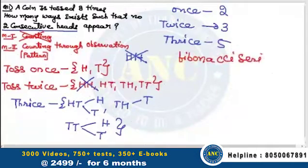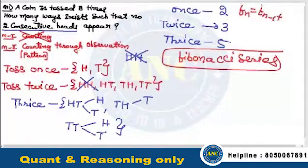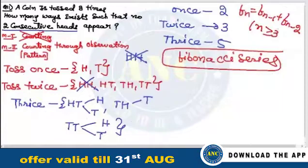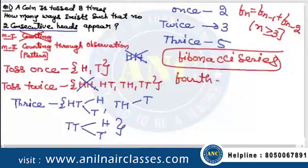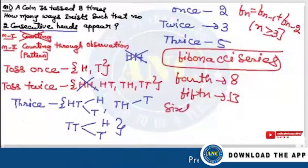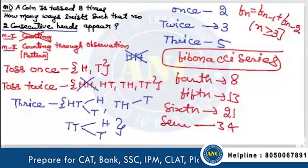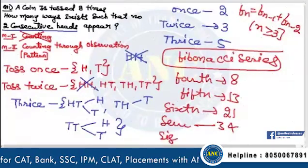This is a beautiful application of the Fibonacci series. F(n) = F(n-1) + F(n-2) — each term is the sum of the previous two. So: once = 2, twice = 3, thrice = 5, fourth = 8, fifth = 13, sixth = 21, seventh = 34, eighth = 55. The answer is 55.